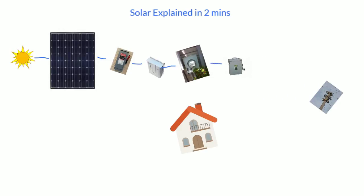Then we go through an AC disconnect, another way to shut it off. From there, it goes into the utility first.